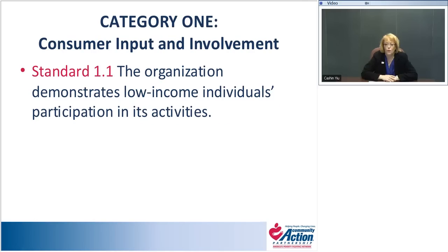Category 1.1: the organization demonstrates low-income individuals' participation in its activities. This standard is going to be really straightforward for your community action agency. Many of you engage low-income folks across your organization — perhaps in program implementation. You may have parents engaged in a Head Start classroom, parents on a Head Start policy council, folks serving on your board of directors, or a Tenant Council Advisory Board. This standard basically asks you to document how that happens.